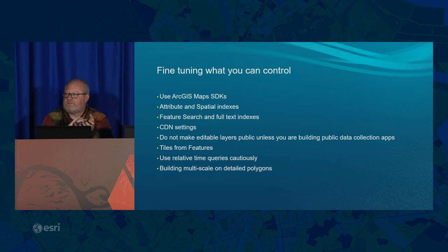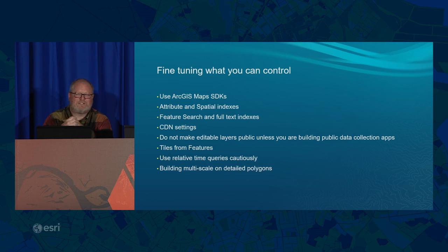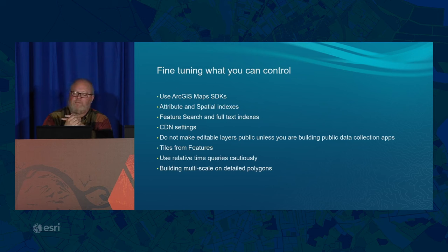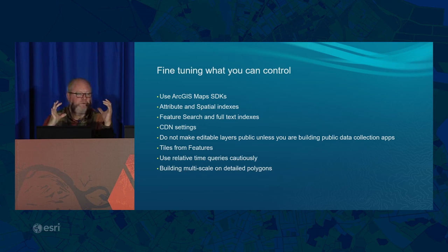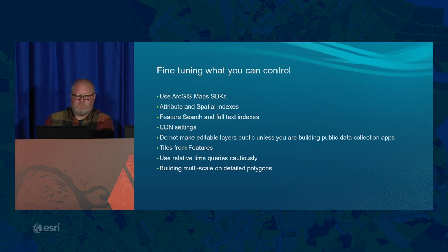Within the feature service page for hosted services, you can control feature search and full-text indexes. If you're searching into data in your layer within ArcGIS Online, you can use full-text indexes and control CDN cache duration settings. Be very careful with editing — when you enable editing, you're not benefiting from CDN caching. So be careful about making editing available to the public. If you need to show five million features zoomed all the way out, you need to take advantage of raster tiles for features.